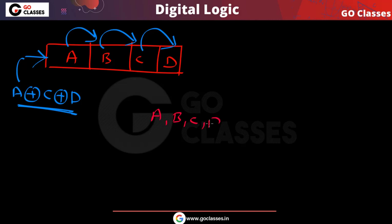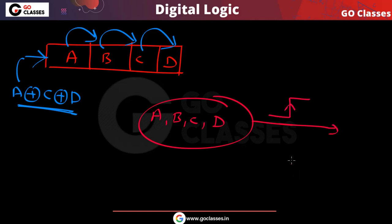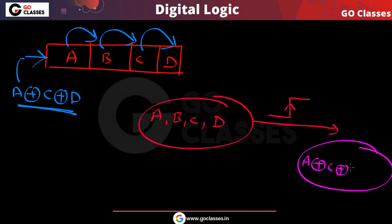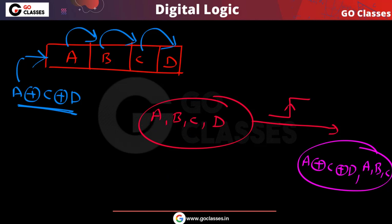If the current state of the register is A, B, C, D, then after one clock pulse the content will be: the new leftmost bit is A XOR C XOR D, and the remaining bits shift right as A, B, C. So the next state is (A XOR C XOR D), A, B, C.